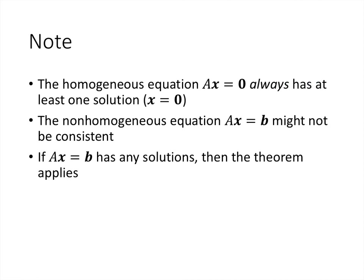A couple of notes: the homogeneous equation Ax equals 0 is always consistent — it always has at least the solution x equals 0, though it may have no others. However, the non-homogeneous equation Ax equals b might have no solutions at all. If row reduction produces a pivot in the last column of the augmented matrix, the equation is inconsistent. The theorem only applies when Ax equals b is consistent — it's still possible for Ax equals 0 to have many solutions while Ax equals b has none.